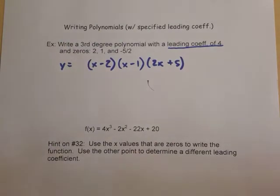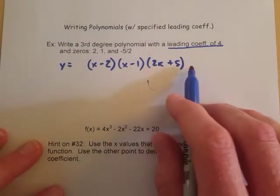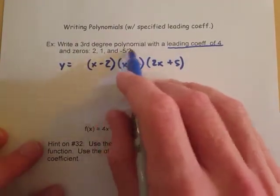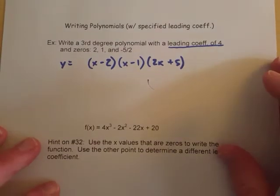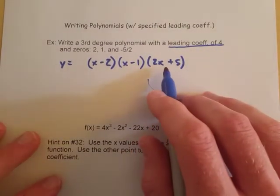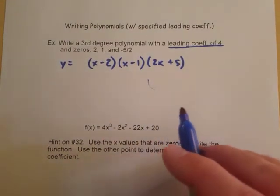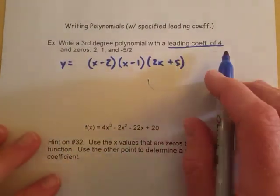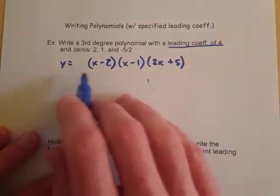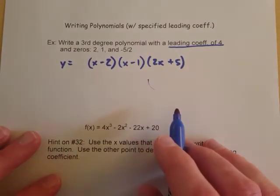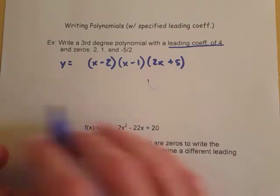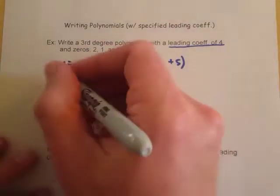Remember if we set that equal to zero and solve for x that should give us negative five halves. But if you're wondering how to get that you just have to work your way backwards on this one. So we're looking for a polynomial with a leading coefficient of 4. We've got this and we want the standard form to be to have it all written out.